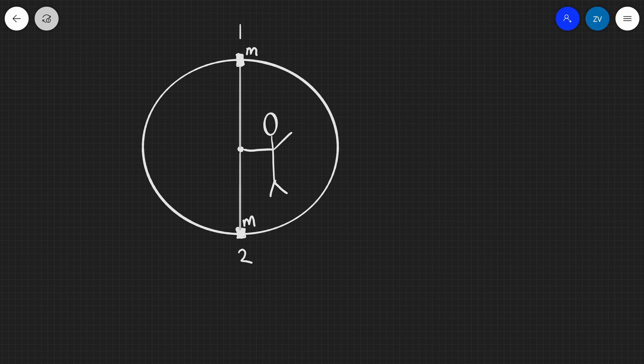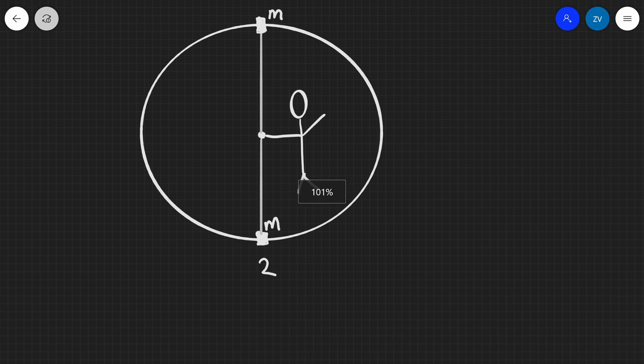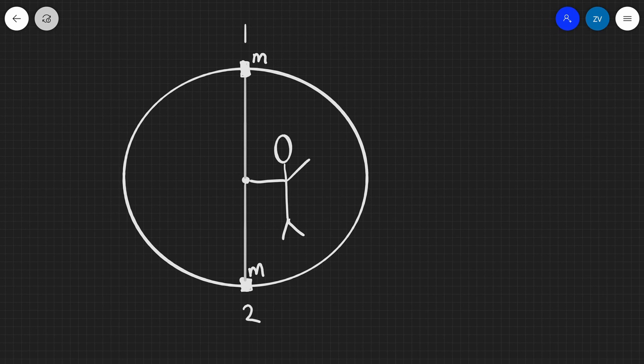What we're going to be talking about today is vertical circular motion. Now, in order to visualize that, I've made a little drawing over here. You can see that I've put my artistic skills to the test. We have a person who is spinning a mass M in a vertical circle.